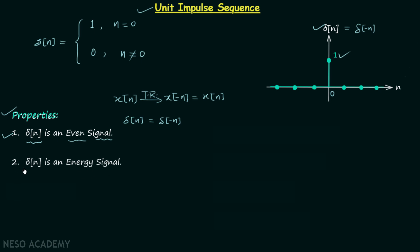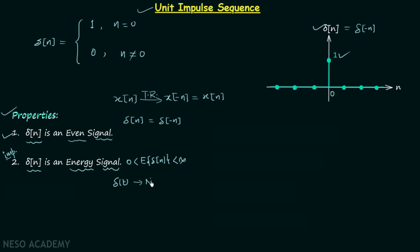Now we will move on to property number 2. According to property number 2, delta[n] is an energy signal. The energy of delta[n] is finite — greater than 0 but less than infinity — and therefore delta[n] is an energy signal. Note that if you go back to the continuous time signals lectures, delta(t) is neither an energy nor a power signal. So delta[n] is an energy signal but delta(t) is neither. This is one important property to remember.